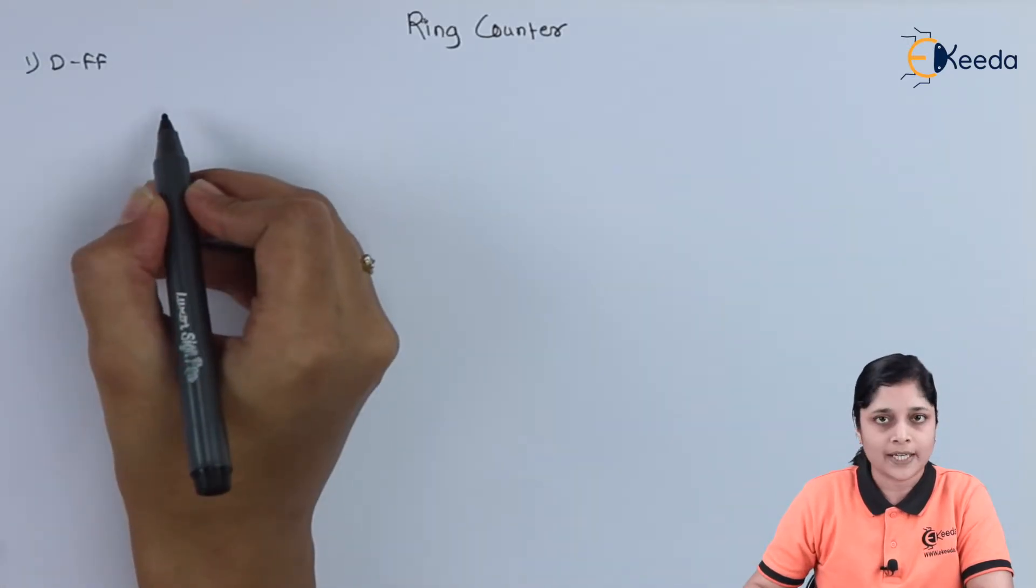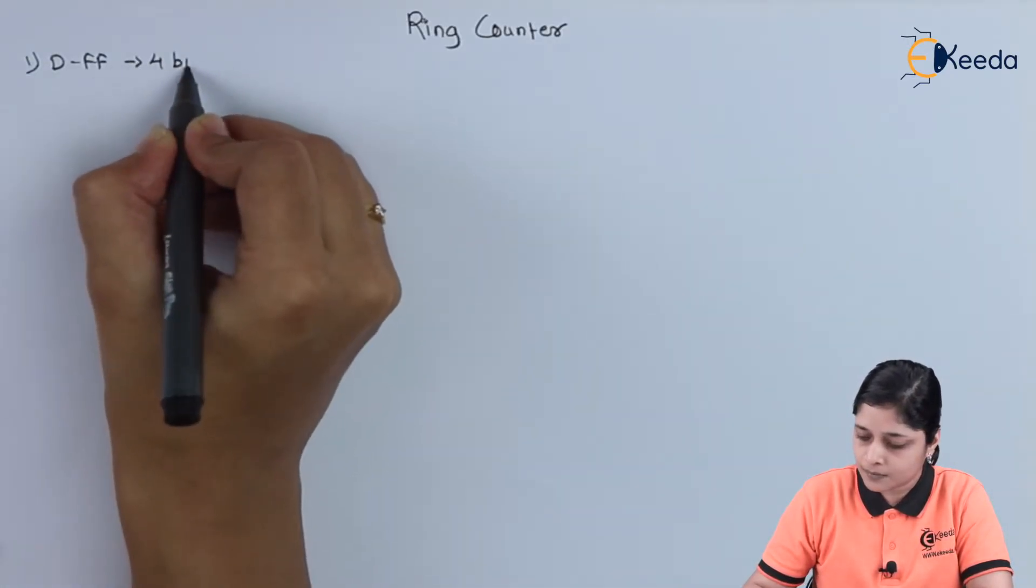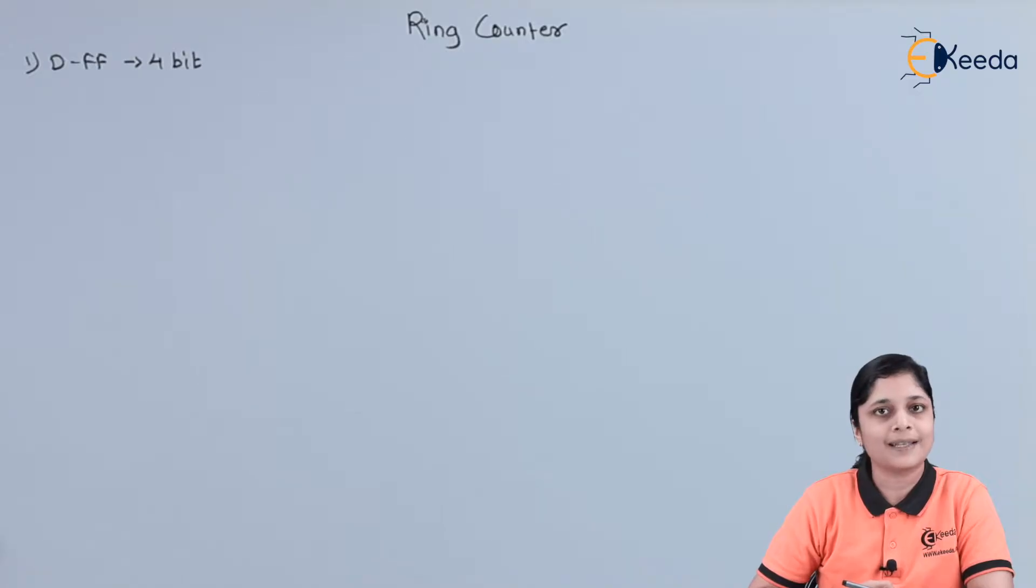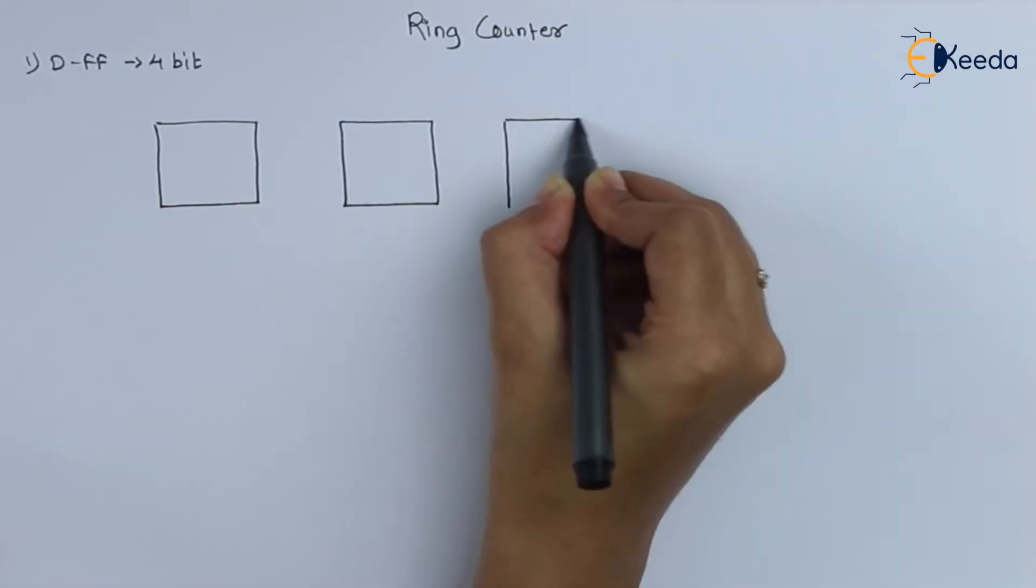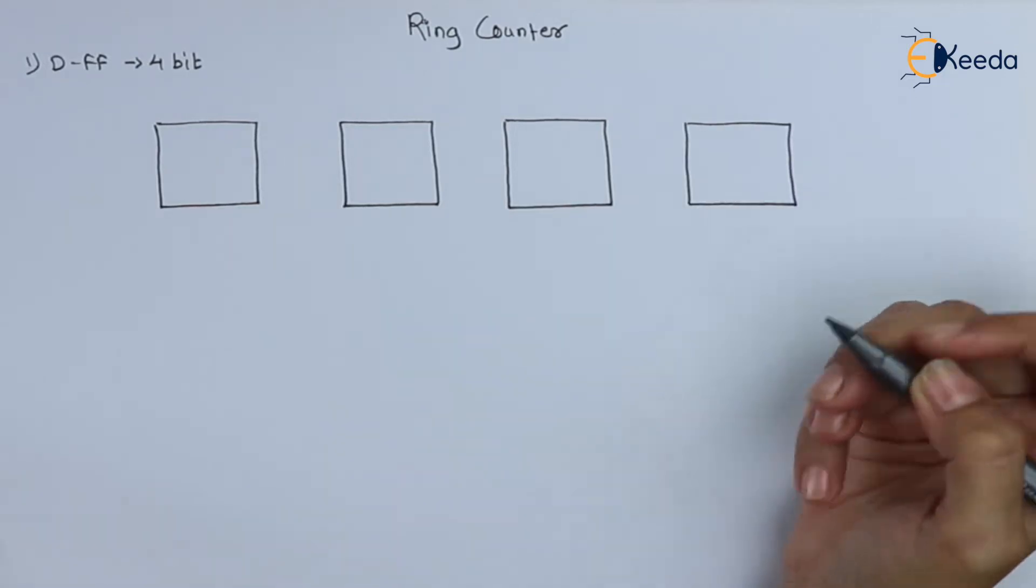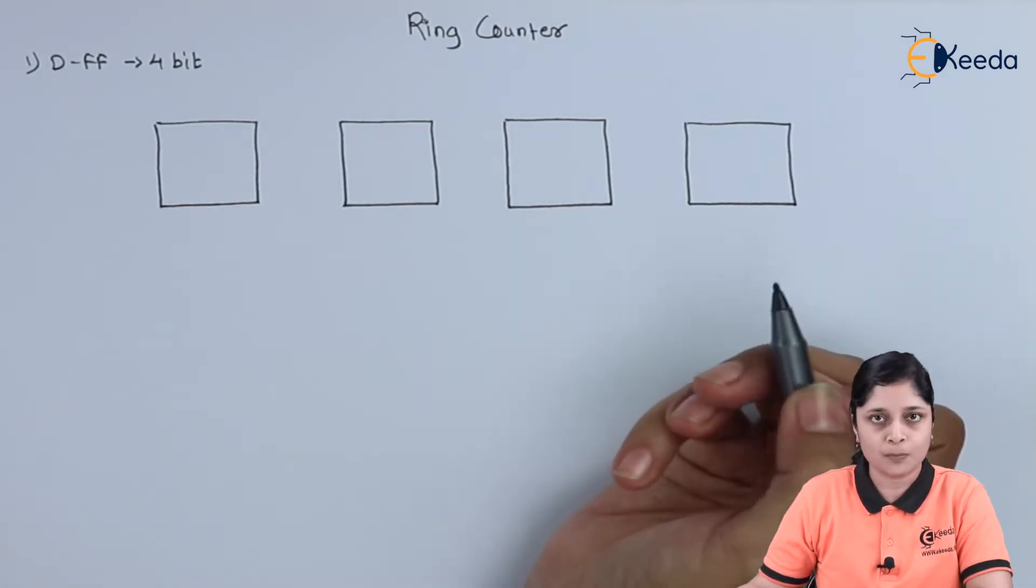Let's start the logic diagram. Here, 4 bits are there. So 4 number of D flip-flops we are going to use.